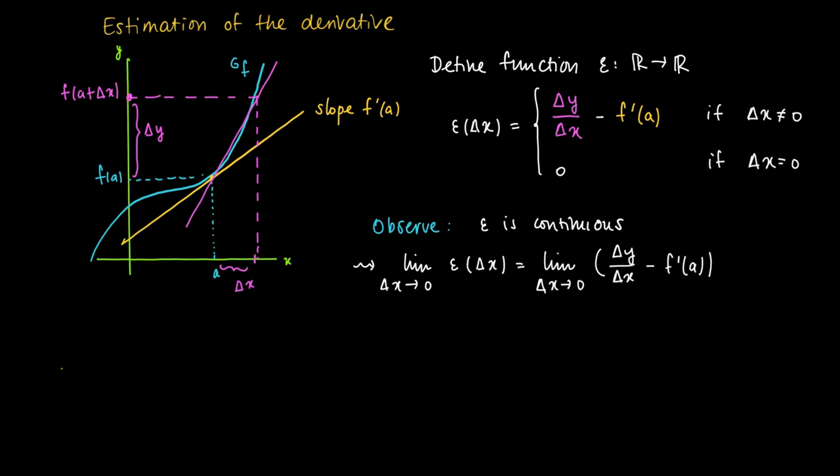f'(a) in the story is a constant, so we can take it out of the limit. So we get the limit for Δx to 0 of Δy/Δx. So this is a separate limit now, and we subtract the value of the derivative of f at a, f'(a).